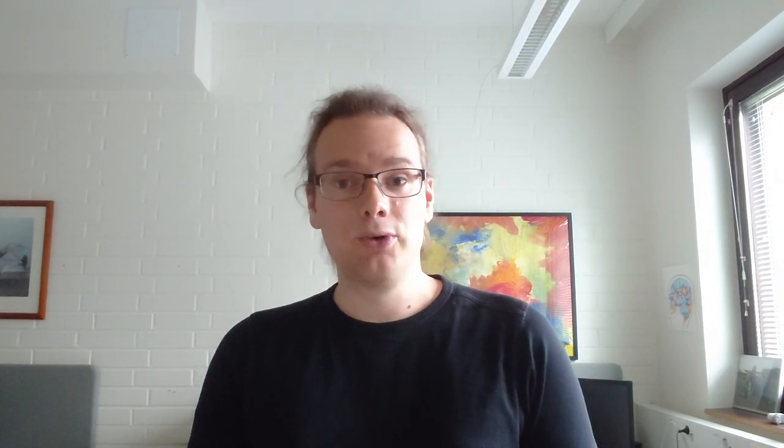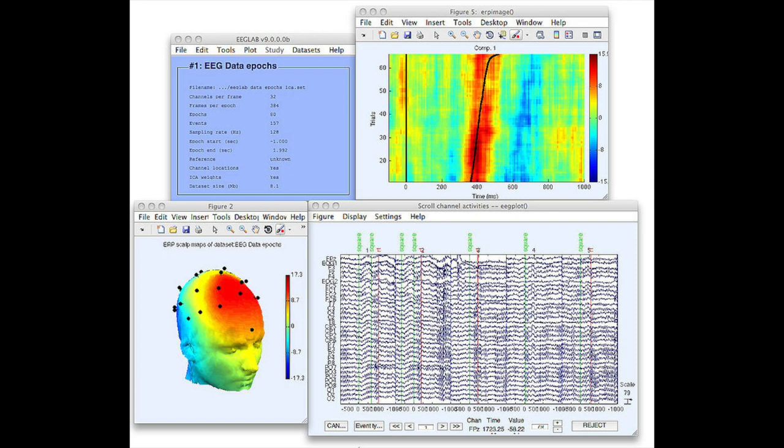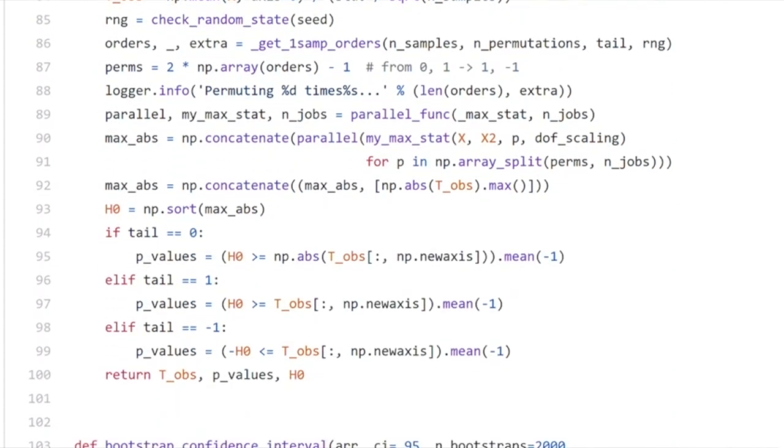We also support more file formats than ever, including Curry files, the new NYU 2019 KIT system, and we can directly import independent components straight from EEGLAB. We're also faster than ever, with speed improvements all over the codebase.